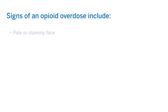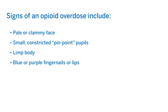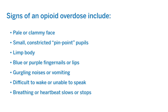Signs of an opioid overdose include a pale or clammy face, small, constricted, or pinpoint pupils, limp body, blue or purple fingernails or lips, gurgling noises or vomiting, the person is difficult to wake up or is unable to speak, and the person's breathing or heartbeat slows or stops.